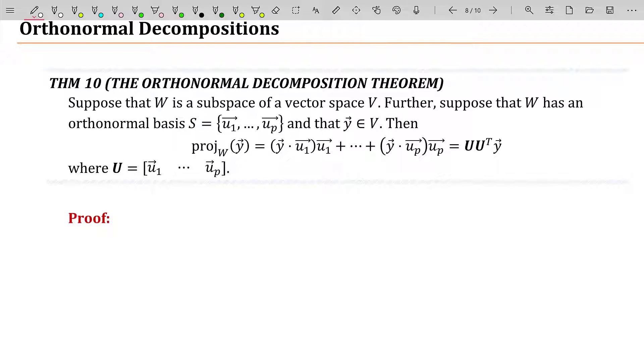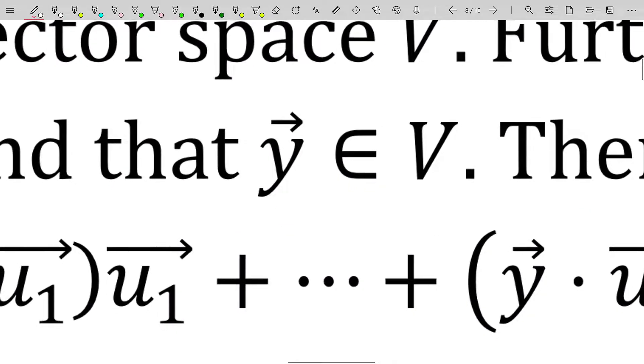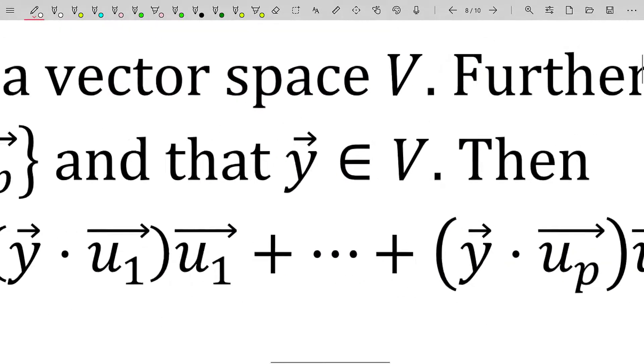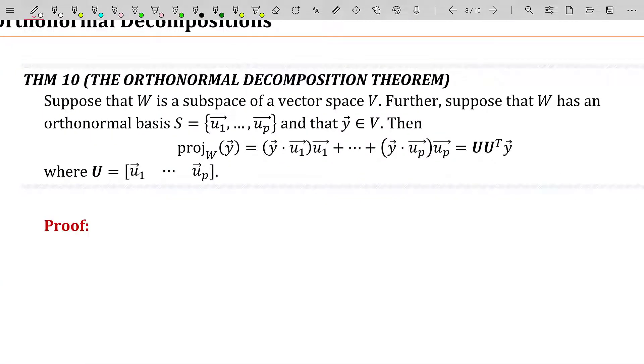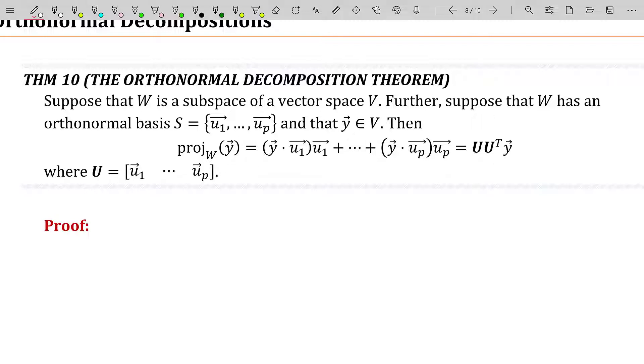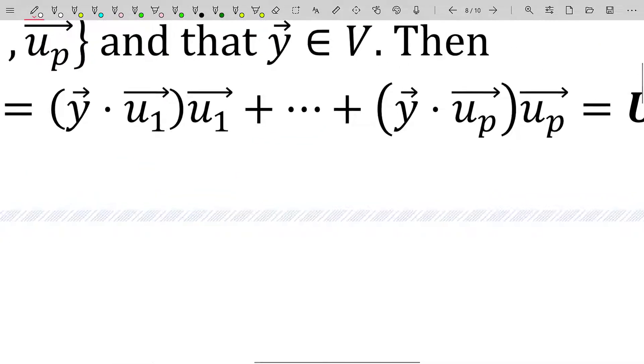So now we're just going to further that statement a little bit. Suppose that W, again, is a subspace of a vector space V. Further, suppose that W has an orthonormal basis u sub 1 through u sub p. We're going to call that orthonormal basis S. And we're also going to suppose, as usual, that y is a vector in the vector space V. Hopefully, that y is not in our subspace W. Otherwise, this is very trivial. Now we're concerned about what is the vector that represents the shadow of y onto that subspace W. But in this case, we don't have orthogonal basis vectors, but instead orthonormal basis vectors.